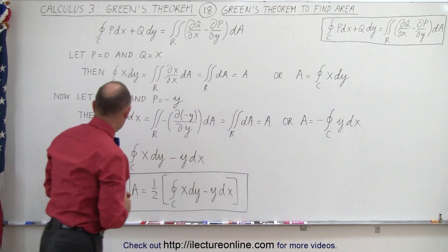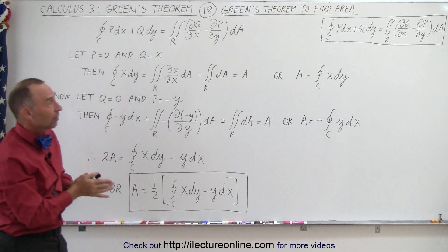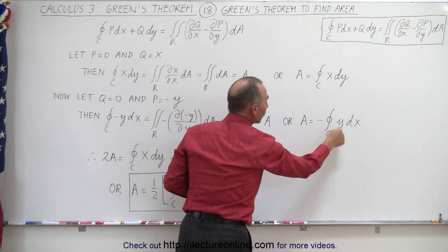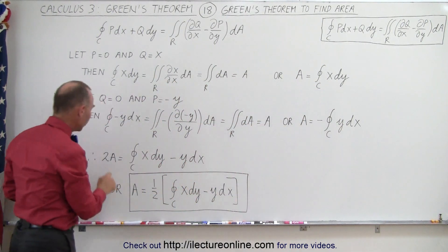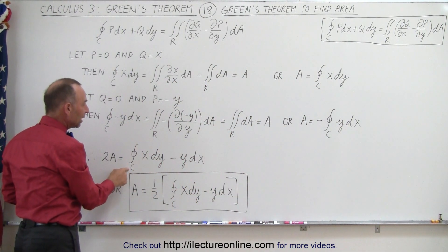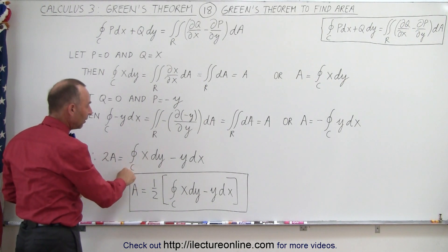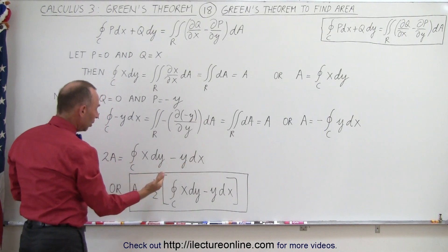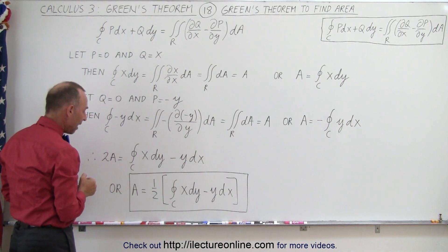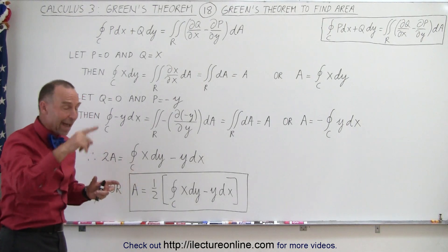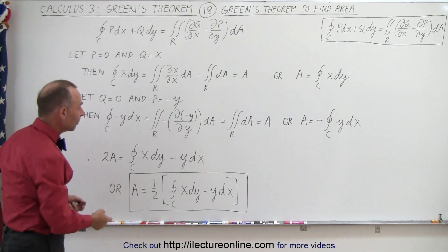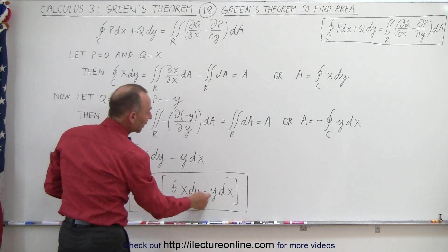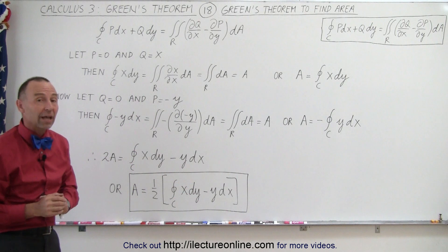Which means that if we add the two together, then 2A will be equal to the sum of those two, which means that 2A will be equal to the line integral over the entire closed path of x dy minus y dx. Or if we divide both sides by one half, the area enclosed by the path can be found to be one half times the complete line integral of x dy minus y dx, and quite often that is very easy to execute.